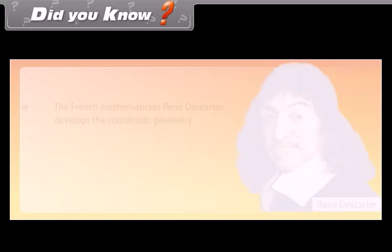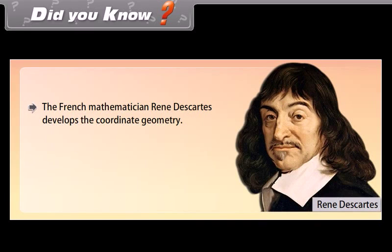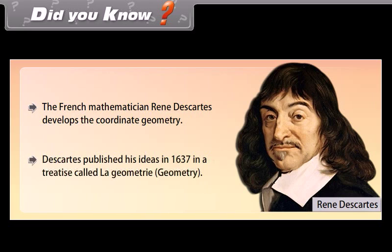Did you know? The French mathematician René Descartes developed coordinate geometry. Descartes published his ideas in 1637 in a treatise called La Géométrie.